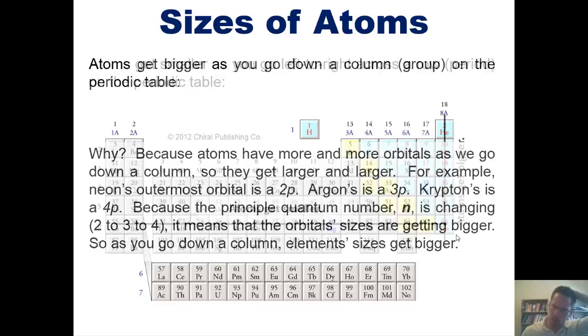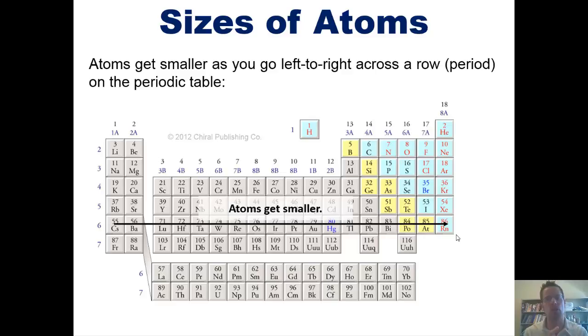Now, this is kind of not as intuitive, but atoms actually get smaller as you go left to right across a row or a period. As you think about this, you might wonder why. Because as you go across a row from left to right on the periodic table, you're getting more electrons added to each element. For example, oxygen has one more electron than nitrogen, which has one more electron than carbon, and so forth.